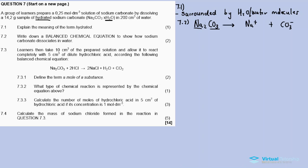Sodium has a charge of positive one, since sodium is in the first group of the periodic table. The carbonate ion CO₃²⁻ is a negative ion with an ionic charge of negative two. There is a table listing common ions and their chemical formulas — I will include a list of ions in the description.